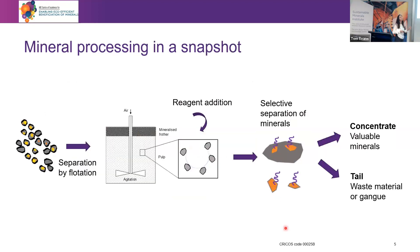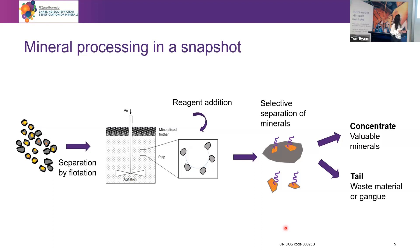Let's have a look at mineral separation in a snapshot. We first need to break up the rocks into small particles — down to the micrometer size — so we can liberate them. These particles are then put into a flotation tank where they're mixed with water, air, and flotation reagents, which we use to alter the surface chemistry of the minerals so that we can achieve selective separation.